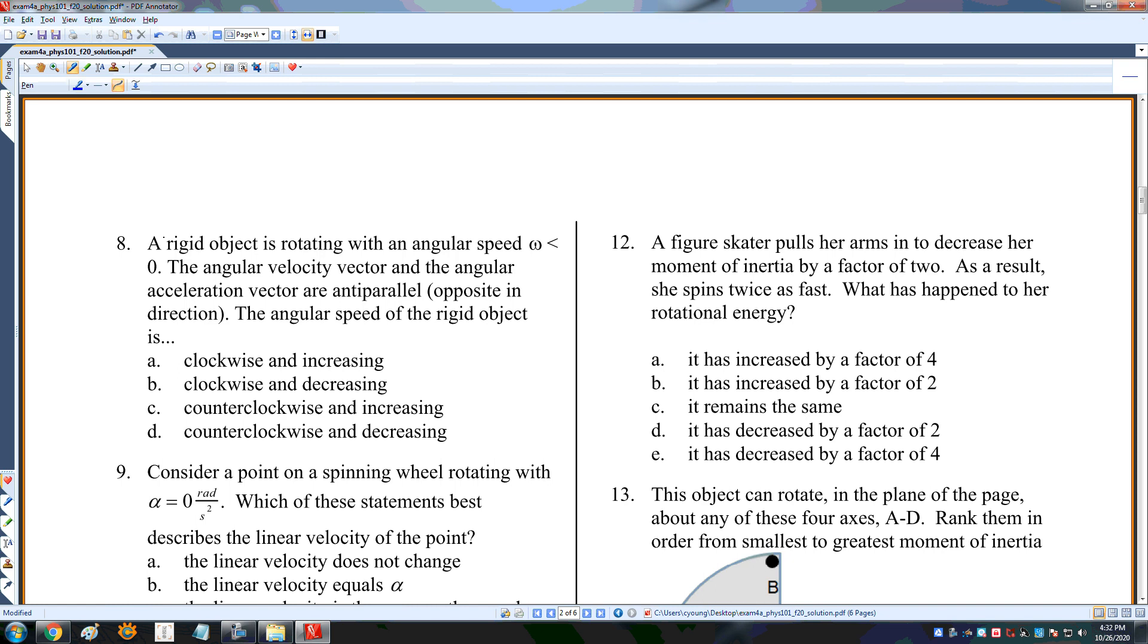A rigid object is rotated with an angular speed that's negative, so I have a negative omega. The angular velocity and angular acceleration are anti-parallel, meaning they're opposite in direction, so I have a positive alpha. This tells me it's clockwise, and because this is opposite, that tells me it is decreasing or slowing. So it should be clockwise and decreasing. Number 8 is clockwise and decreasing.